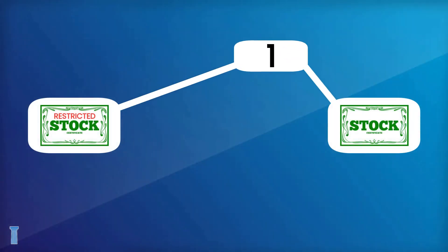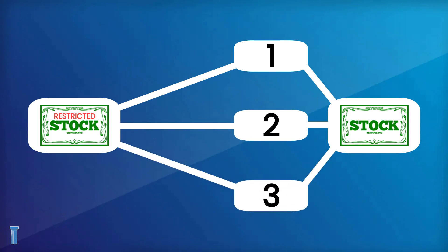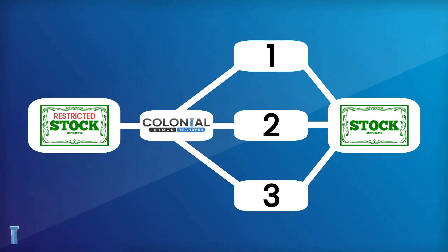The process of lifting these restrictions can vary, but generally involves confirming that your shares are no longer bound by any pre-IPO agreements. This is where working with a knowledgeable transfer agent, like Colonial, becomes essential.